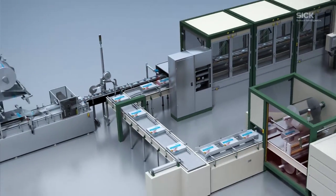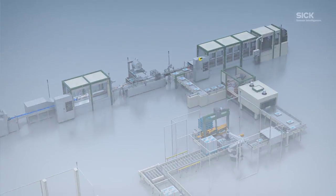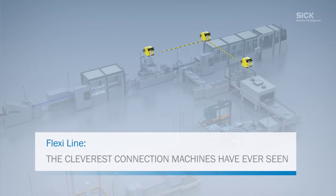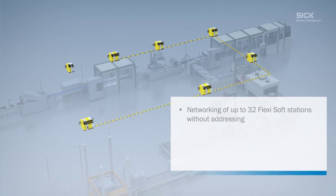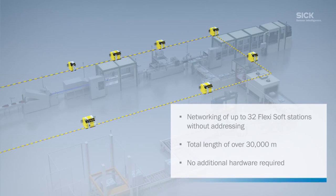And now, the cleverest part of all. FlexiLine. With FlexiLine, there's no need for addressing. You can incorporate up to 32 FlexiSoft stations with 30,000 meters of distance between the first and last station.